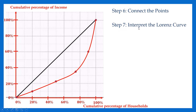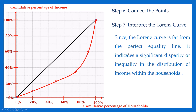In the final step, you should interpret the Lorentz curve. The main diagonal line is called the line of perfect equality. Since the Lorentz curve is far from the perfect equality line, it indicates a significant disparity or significant inequality in the distribution of income within the households. This is the final step in creating the Lorentz curve.